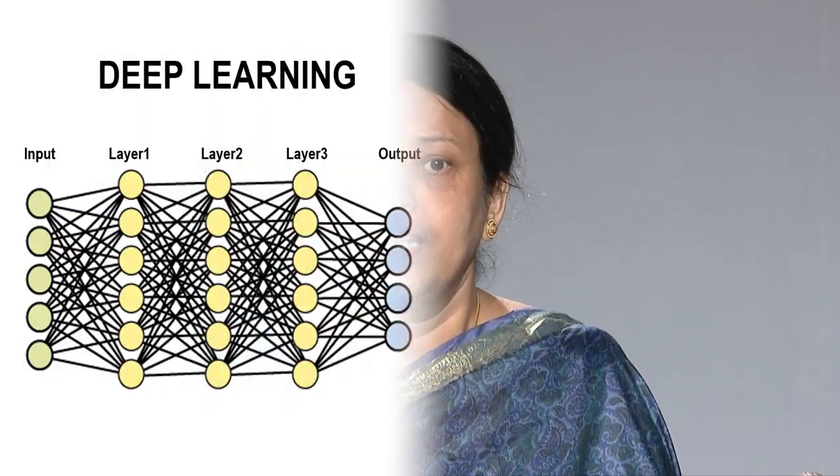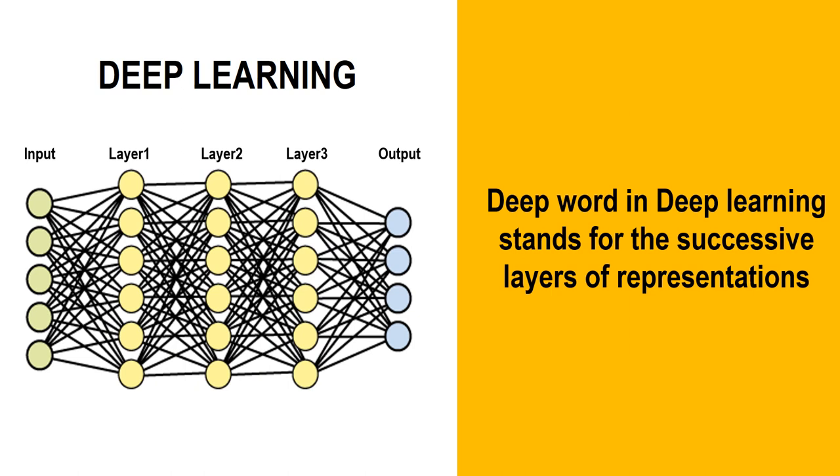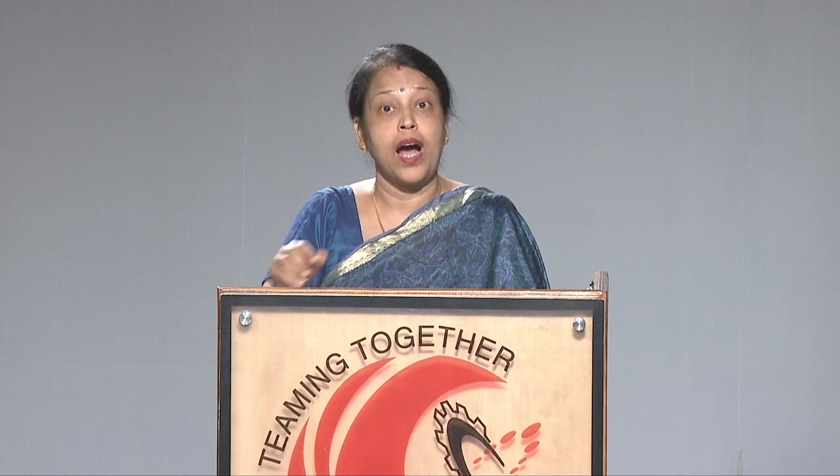In deep learning there are two terms: deep and learning. The word 'deep' stands for the successive layers of representation. In a normal neural network you use only two to three layers, but in deep learning we use 100 to 150 layers — so 'deep' refers to how many layers of depth there are.